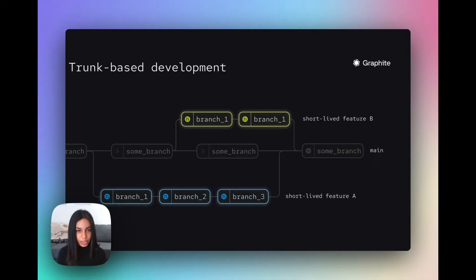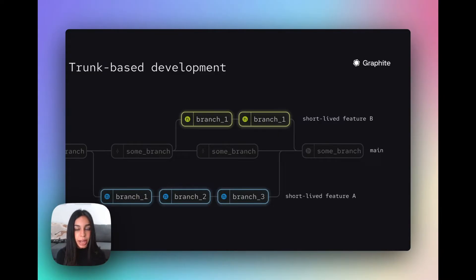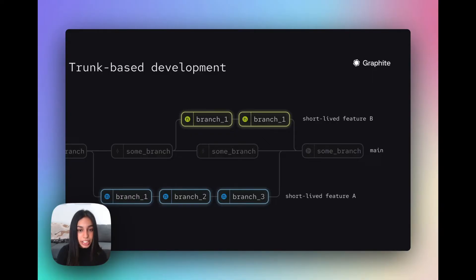Graphite promotes a trunk-based workflow where developers use small, concise PRs that are based off of one another. In the Graphite workflow, each PR in the stack is a branch, oftentimes with only one commit that's continuously being changed or amended. The user frequently syncs changes from main and restacks or rebases their changes to resolve merge conflicts as they go, so their final merge is painless. Breaking the final change into several smaller PRs has several benefits. Users can request specific reviews from different stakeholders on each code change, and they can stay unblocked even though they're waiting for their code to be reviewed by continuously adding changes to the top of the stack.